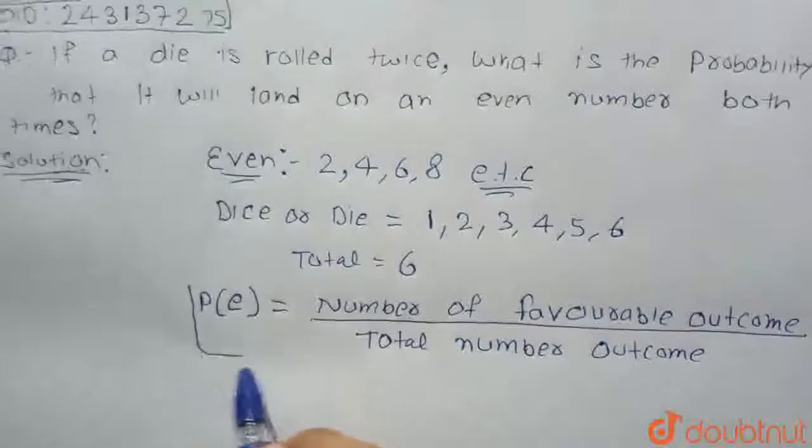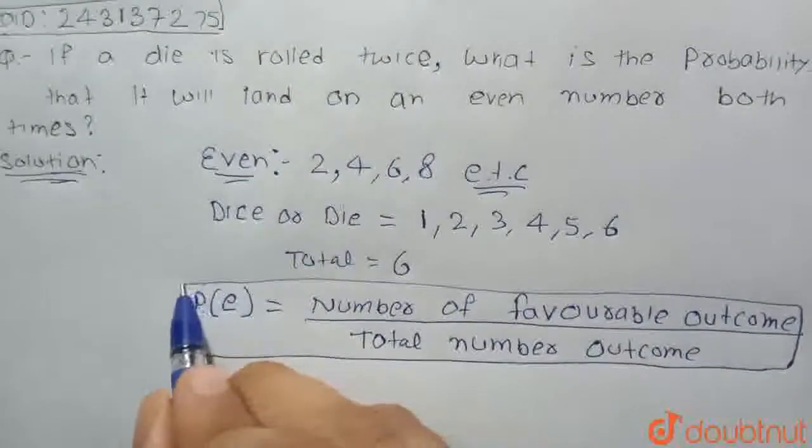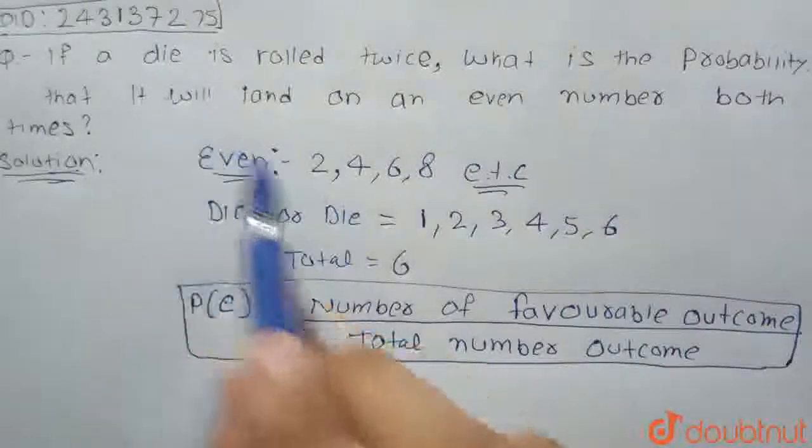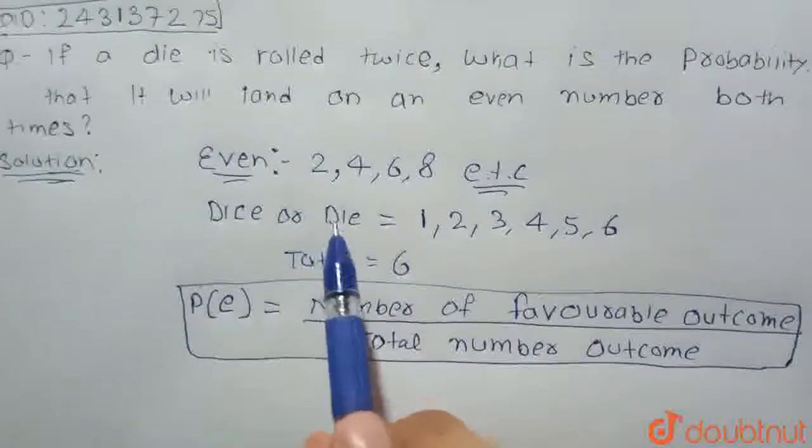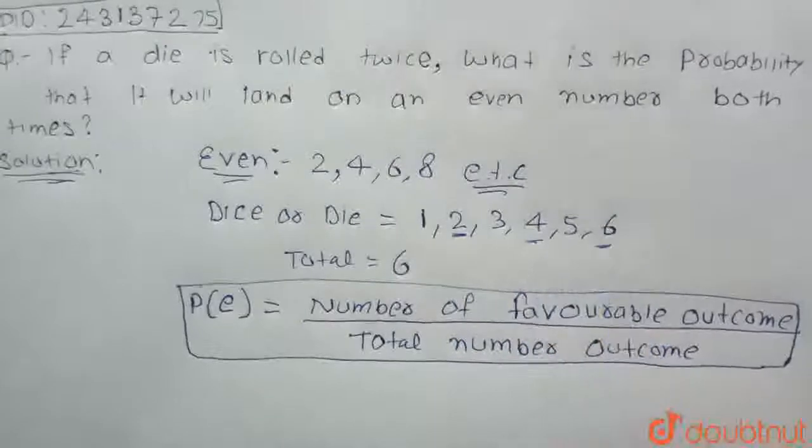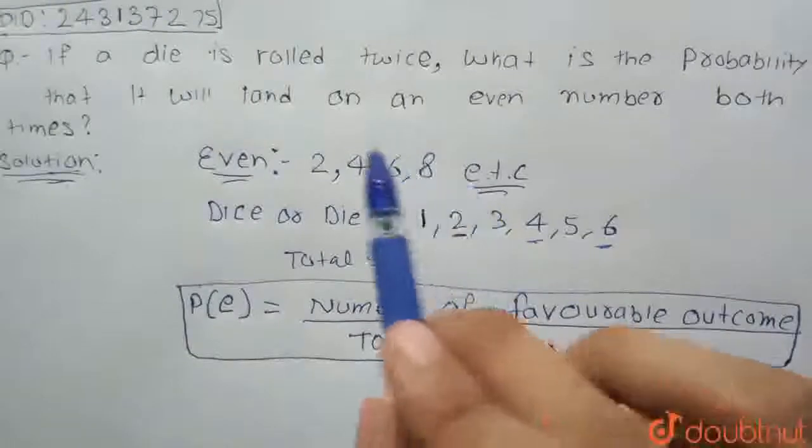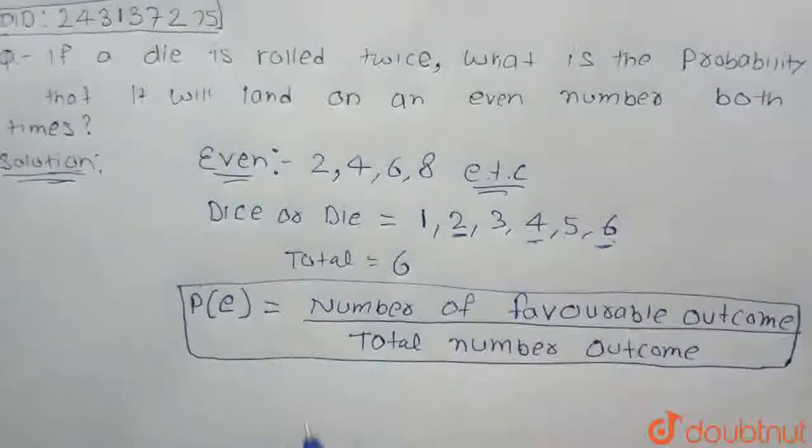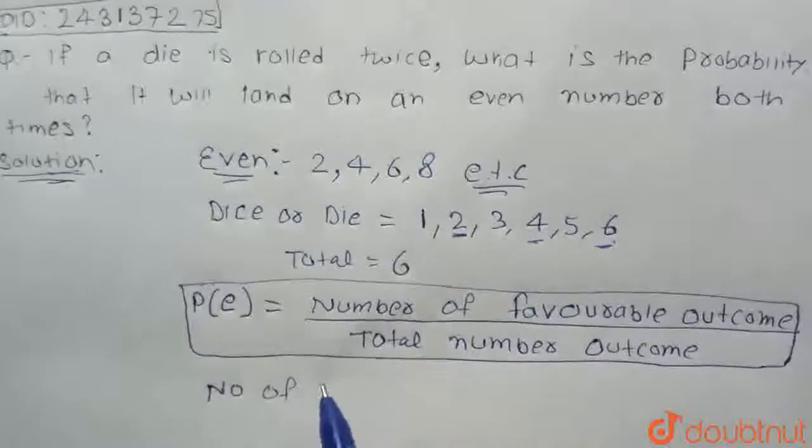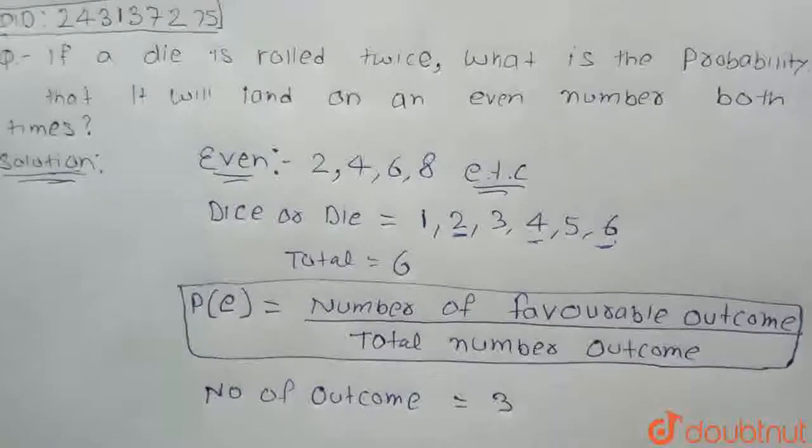We have the formula of probability, through this we will find the answer. The even numbers when a dice is thrown are 2, 4 and 6. So the number of favorable outcomes of an even number when a dice is thrown is 3.